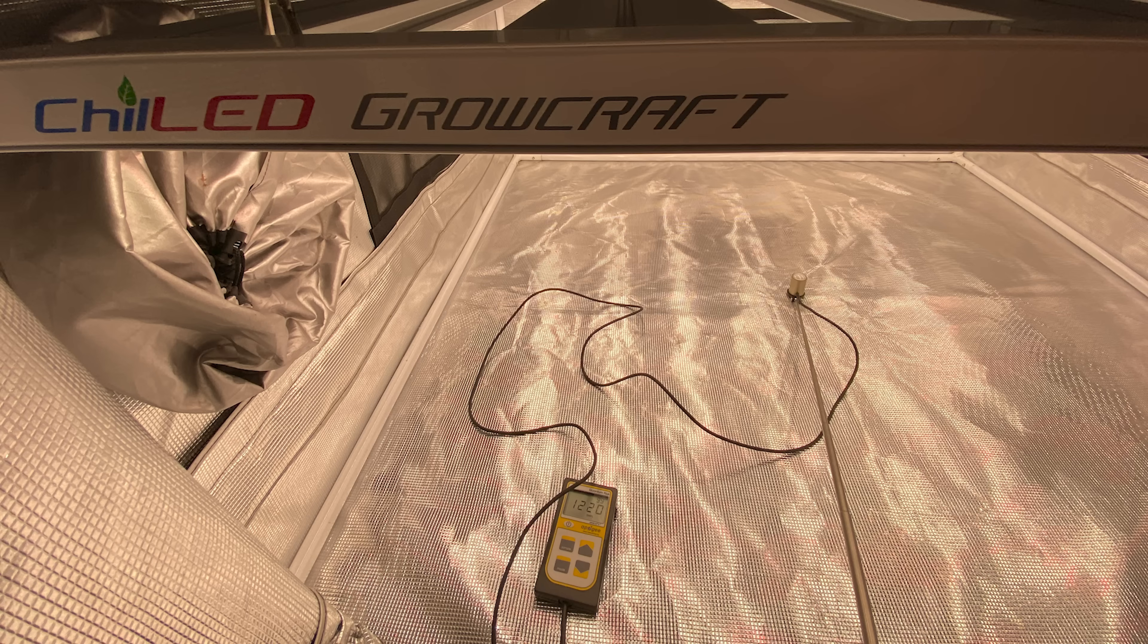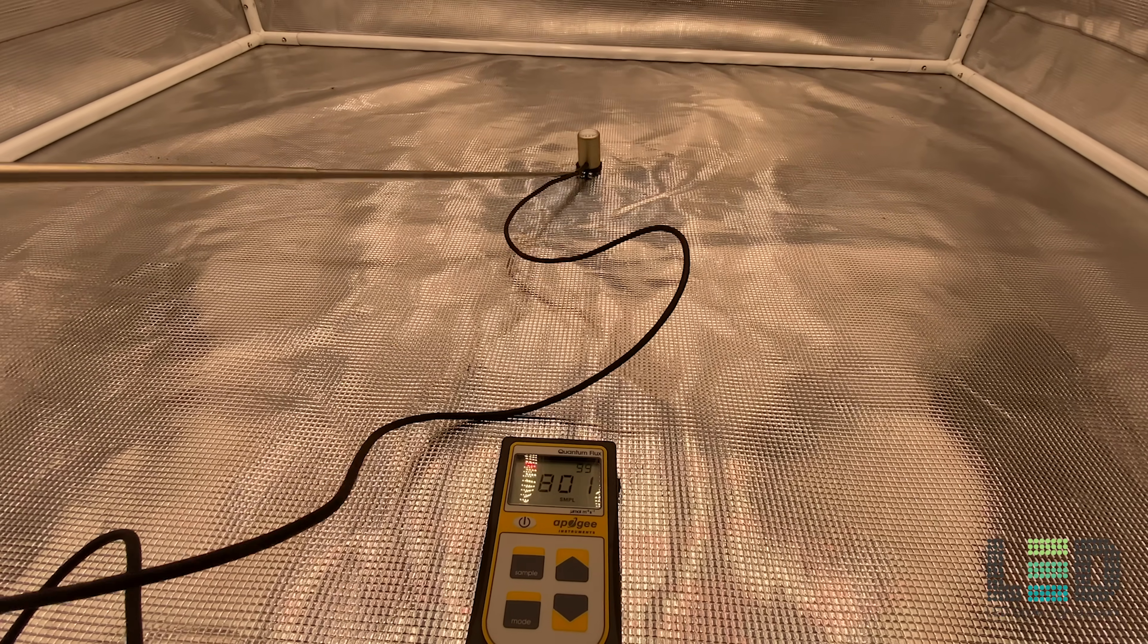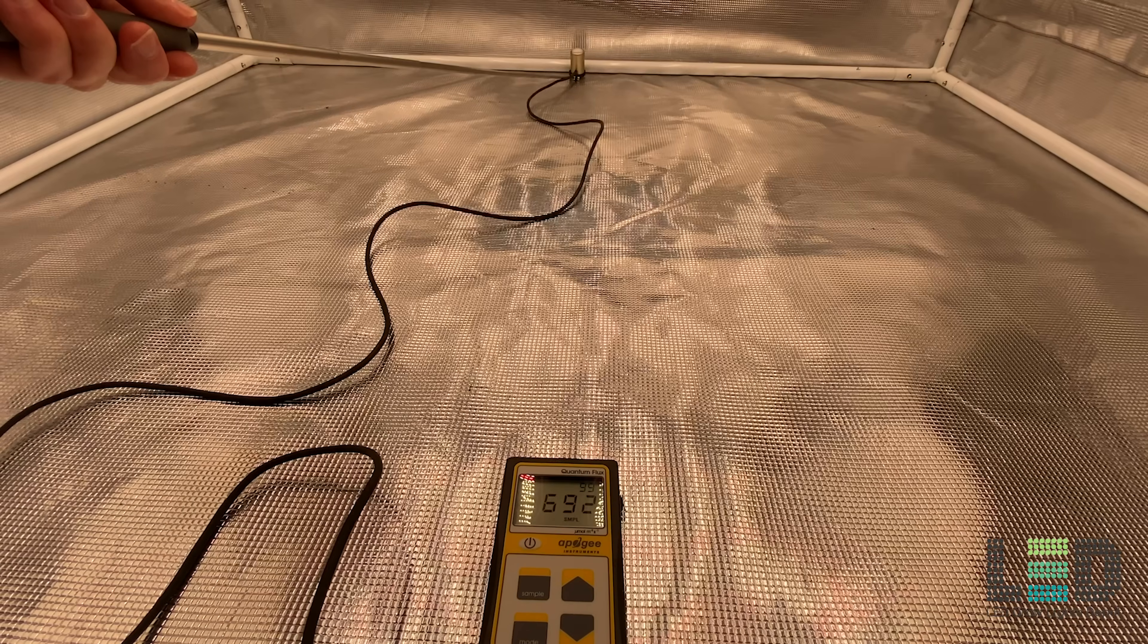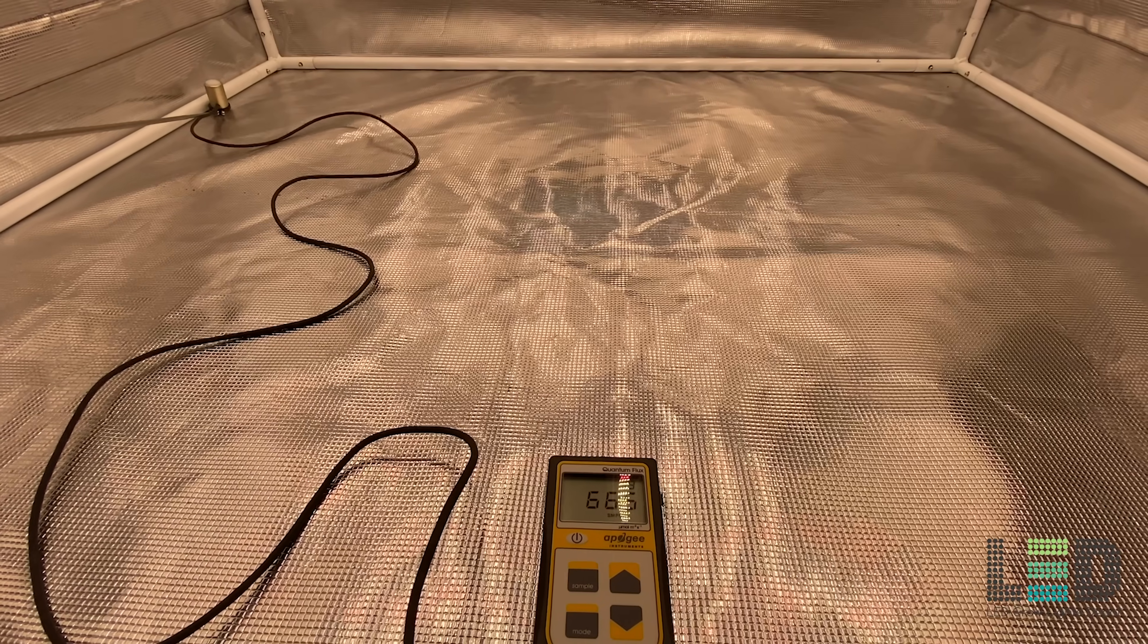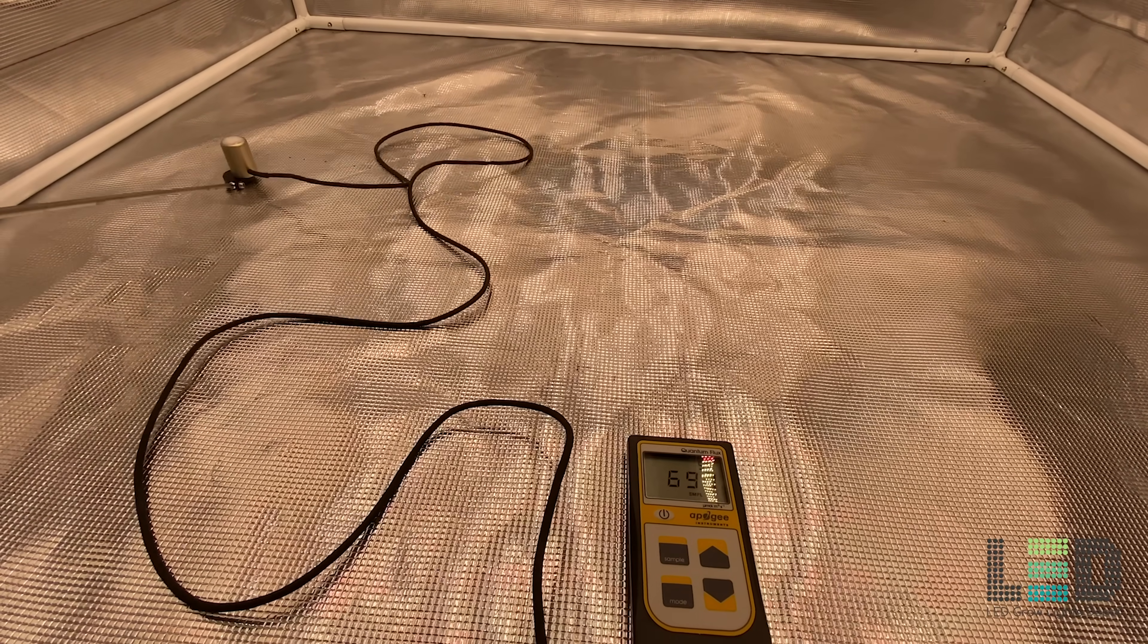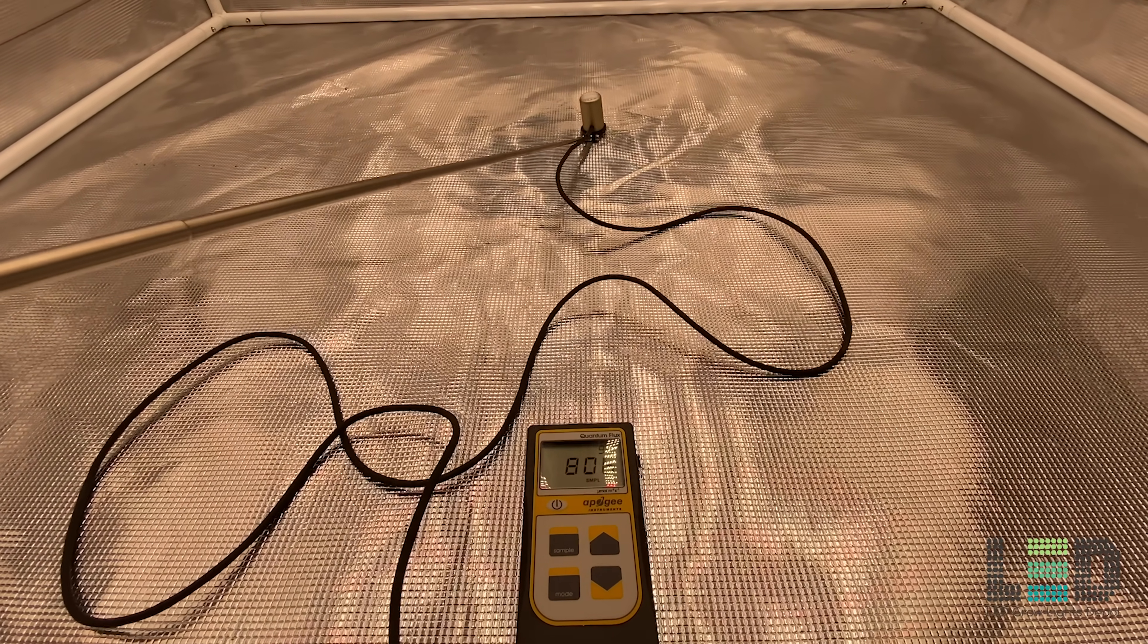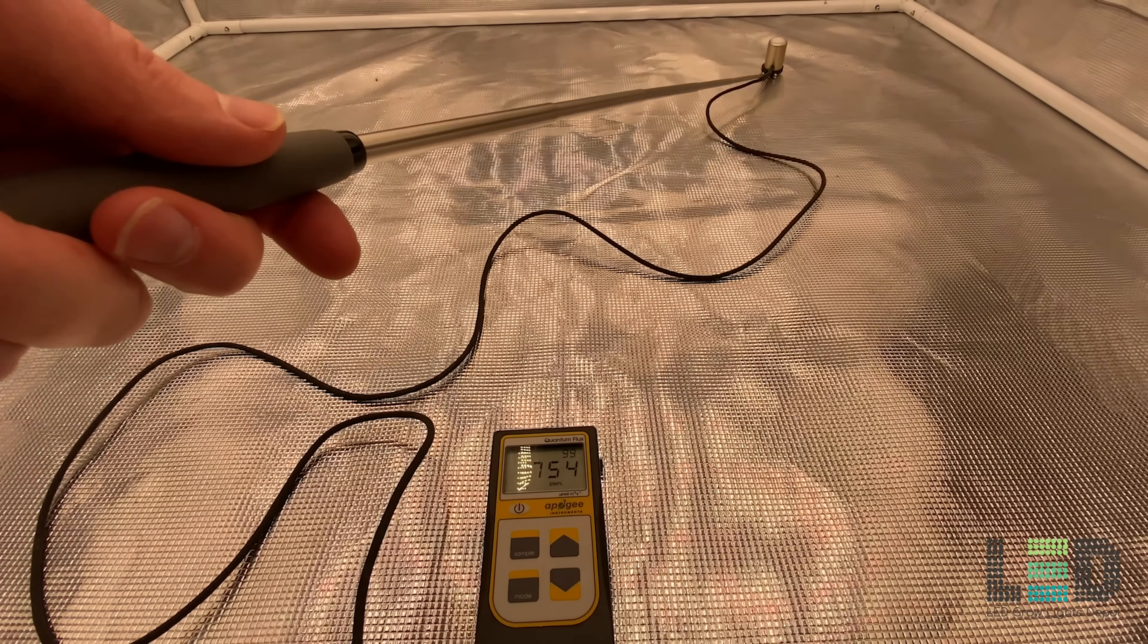I also set up the Growcraft X6 for PAR testing in a 4x4 Gorilla grow tent. Let's check out what kind of readings we're getting at a few different distances. Our first reading is going to be at 36 inches above the bottom of the tent. We're hitting right under 800 PPFD right in the center and to the back about 690 and to the corner about 630. So with these numbers you could definitely flower at this height, however they are considered on the lower end for flowering.